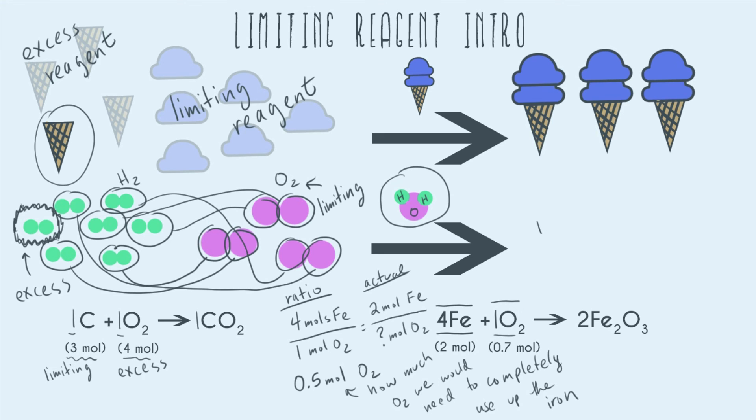All right, so for this ratio to figure out how much iron we would need to use up the oxygen, we have our ratio from our balanced equation. That's one to four. And then on the right hand side, we have how much we actually have. So we actually have 0.7 moles of O2. And let's solve this and figure out how many moles of iron would we need. So going ahead and algebraically solving, we get that we would need 2.8 moles of iron to use up all the oxygen.